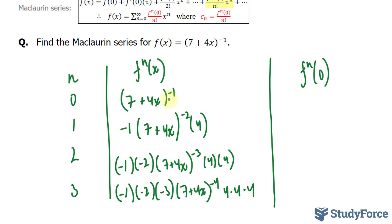If I evaluate this when x is equal to zero, I'll end up with 7 raised to the power of negative 1, which is 1 over 7, or I'll just write it as 7 to the power of negative 1 just to be consistent.